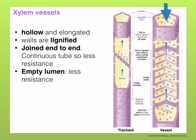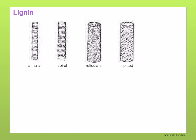Xylem vessels have an empty lumen which provides less resistance. They also have pits which allow for the lateral movement of water, and these pits are formed where the plasmodesmata were. Lignin is a hard and rigid substance. It can be deposited in different ways, giving rise to annular, spiral, reticulate, and pitted xylem vessels.